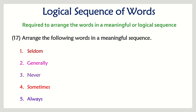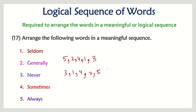Next question: seldom, generally, never, sometimes, always — adverbs of frequency to arrange by frequency. In decreasing order: always (all the time), then generally, then sometimes, then seldom (which means very rare), and finally never. This can also be done in reverse order: never, seldom, sometimes, generally, always.